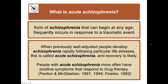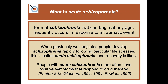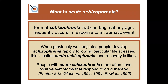Acute schizophrenia is a form that can begin at any age and frequently occurs in response to a traumatic event. When previously well-adjusted people develop schizophrenia rapidly following particular life stresses, this is called acute schizophrenia, and recovery is likely. People with this acute form more often have positive symptoms that are more treatable through drug therapy.